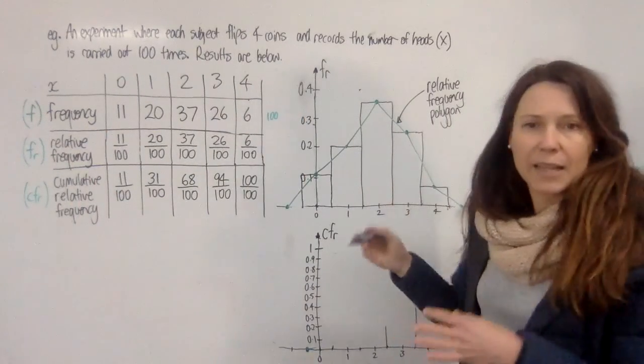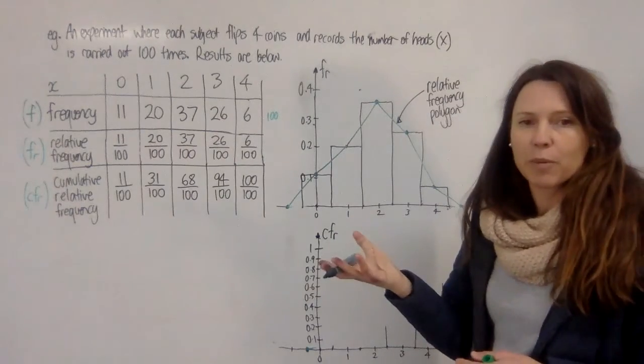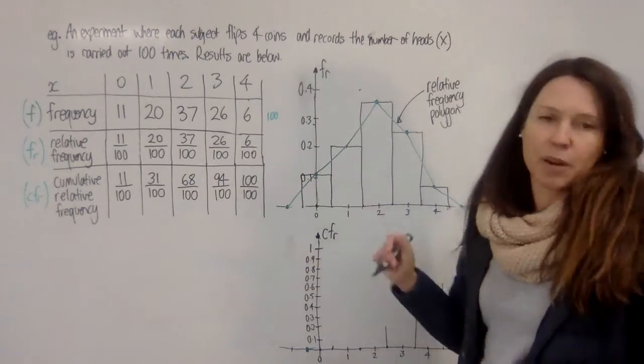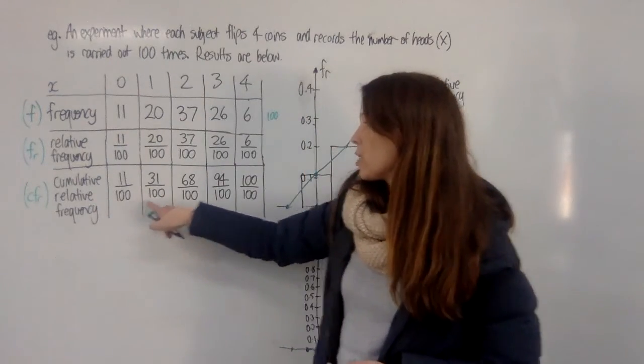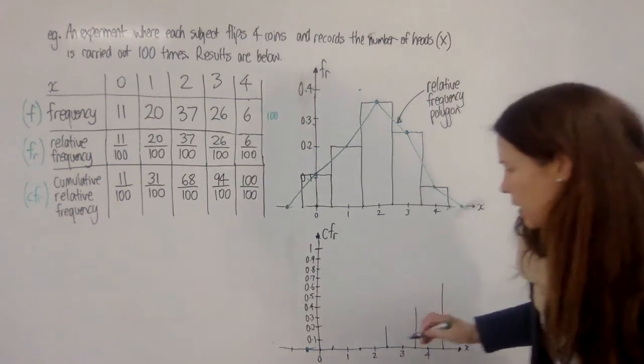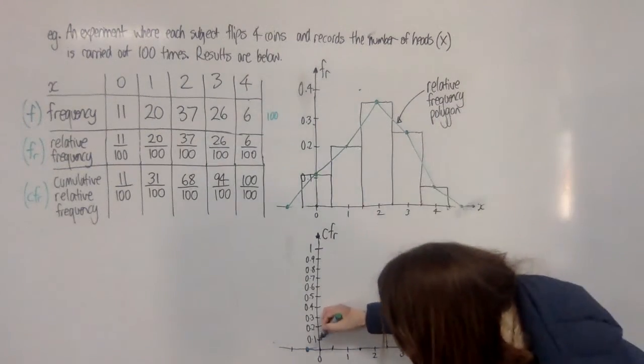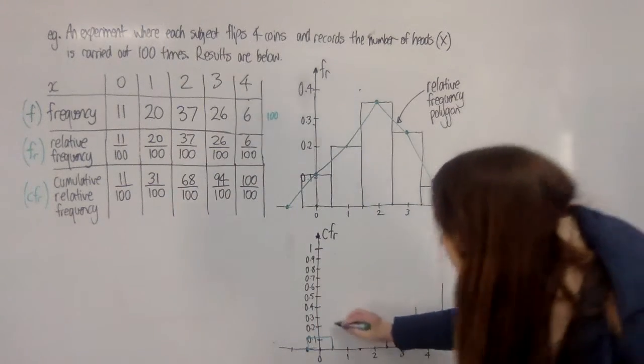Now, just as we can add together things when we're looking at theoretical probabilities, we can do the same with experimental probabilities. So we can have our cumulative relative frequency where we just add up each column. And so as we go to graph these, we're going to end up with our columns getting bigger and bigger.